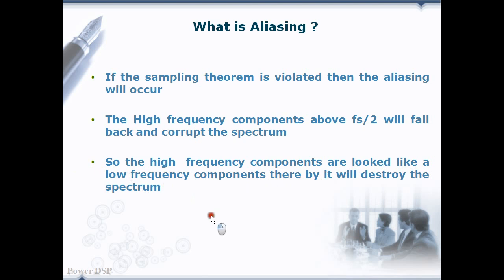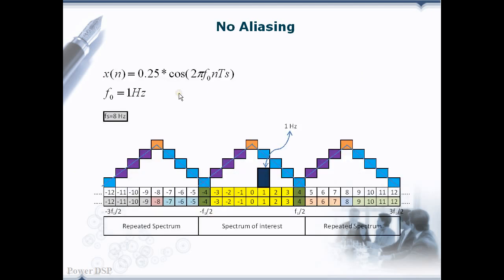Let's see with one example how this is happening. The first case is the no aliasing case. We have taken a simple component of 1 Hz and the sampling frequency of 8 Hz. 1 Hz is less than Fs/2, that is 4 Hz. So there is no aliasing. We can represent it in the faithful spectrum without any problem.